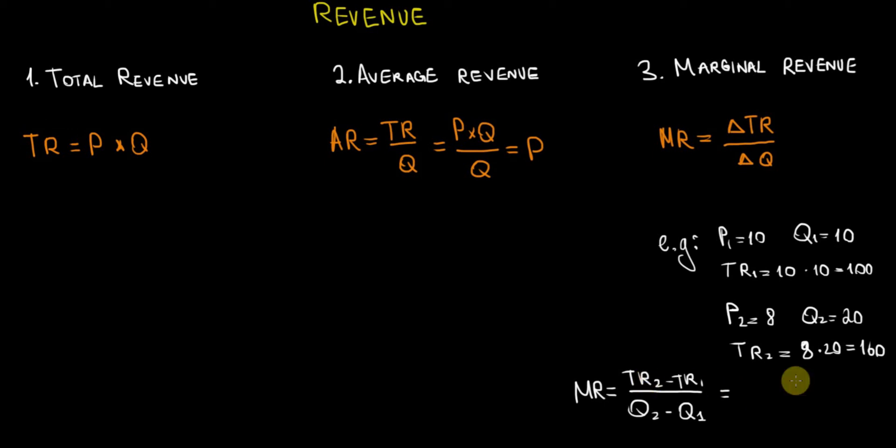TR2 here is $160, so that's 160 minus TR1, which is 100. Divided by the change in quantity—20 minus the initial quantity of 10—that's 60 divided by 10, which equals 6. So the marginal revenue that the company is getting from this price change is $6. It increases its revenue by $6 after this price change. I hope this all makes sense.